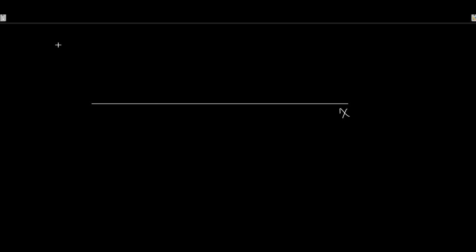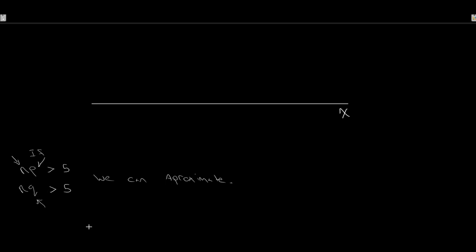To start, let's look at our binomial. If we have a binomial distribution for x with a large enough mean, we say that if both np and nq are greater than five, we can approximate our binomial with a normal. Here n is our number of trials, p is the probability of success, and q is the probability of failure — that is, 1 minus p.